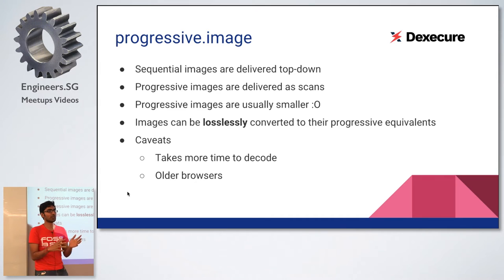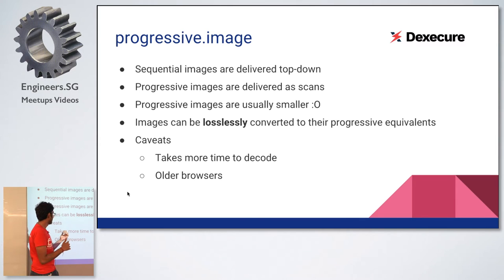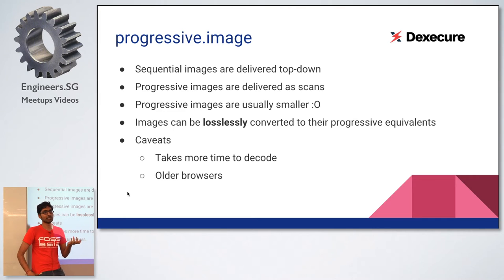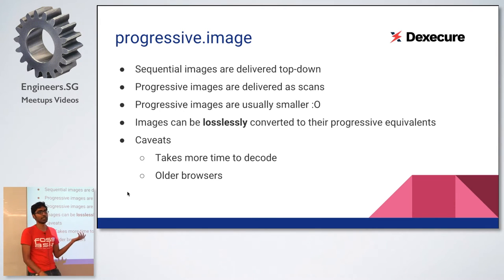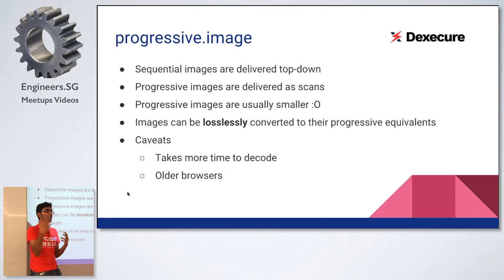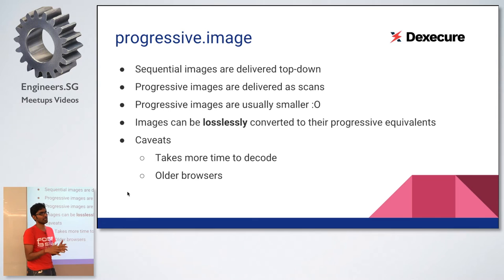There are some caveats before you go ahead and implement this. One is that progressive images take more time to decode — when sending these images to low-powered mobile devices, you need to be careful because the browser is decoding every scan as it arrives, so it's more work. Also, some older browsers don't handle this format well. It's still a valid JPEG, but in old IE browsers you get a worse experience because the browser waits for all the data and then the image appears all at once.